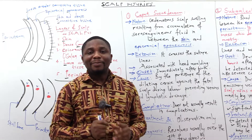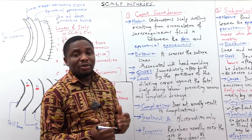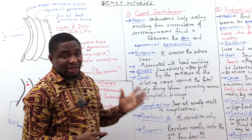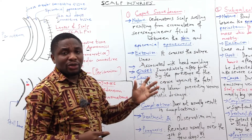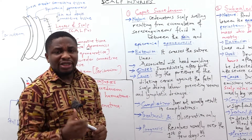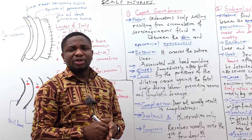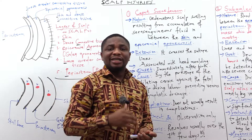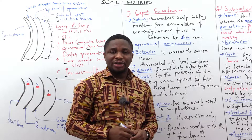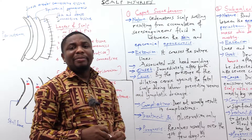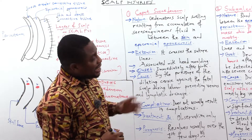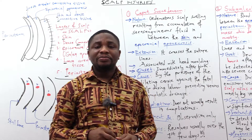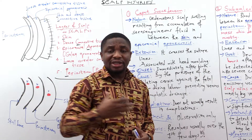Let's look at caput succedaneum in detail. It is a soft, edematous scalp swelling resulting from the accumulation of fluid between the skin and the gallea aponeurotica — meaning it is occurring above the gallea aponeurotica, above the epicranial aponeurosis. Regarding extension, the swelling crosses the suture line.